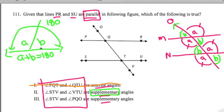right? Two angles that form a straight line, this one, and this one are called supplementary angles. Well, what about this? STV and PQO, well, that's this one right here.